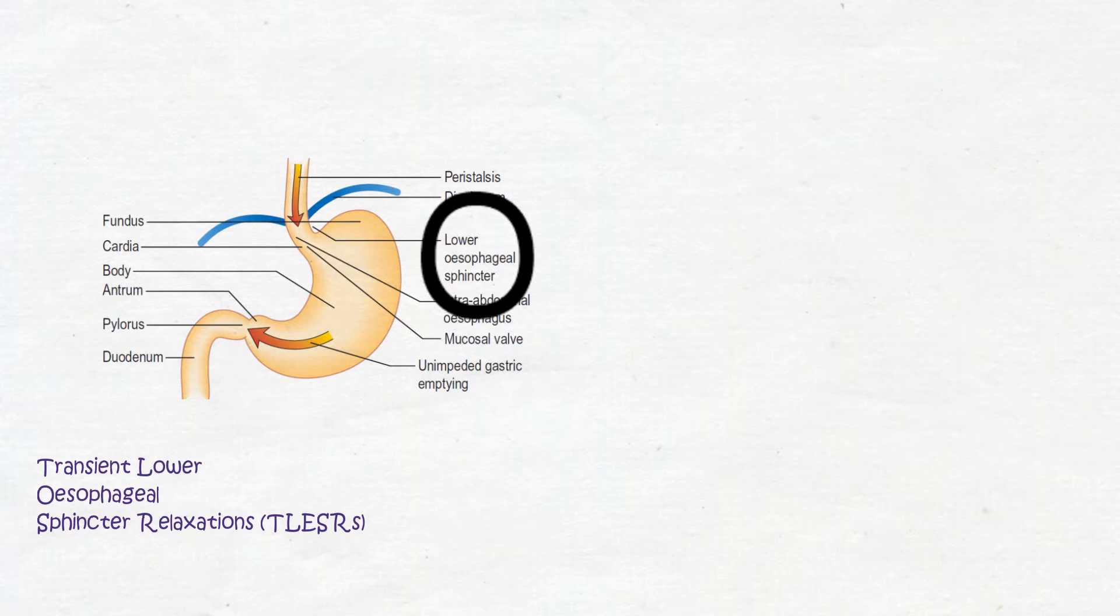The lower esophageal sphincter in the distal esophagus is in a state of tonic contraction and relaxes transiently to allow the passage of a food bolus. Sphincter pressure also increases in response to rises in intra-abdominal and intragastric pressures.